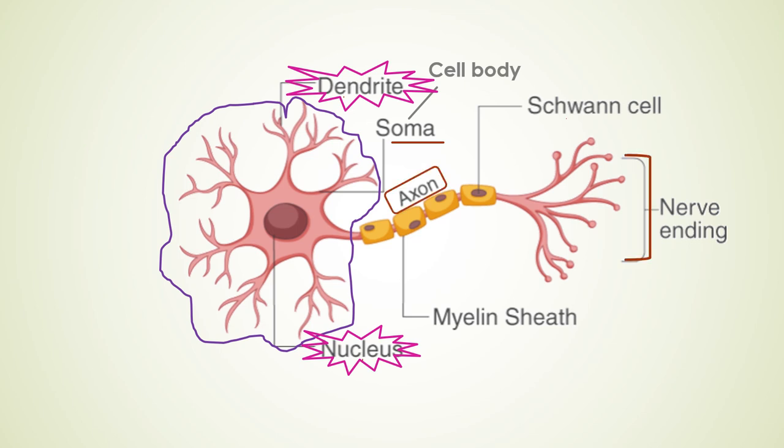The terminal points of axons are called the nerve endings. Different neurons lie end to end to form a network, and nerve endings of one neuron synapse with the branches of other neurons. The terminal points of two neurons do not join; they have a tiny gap between them, and this gap is called a synapse.